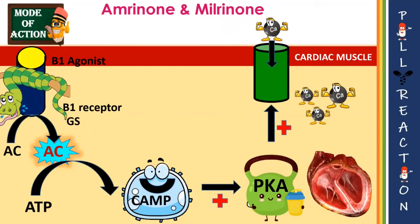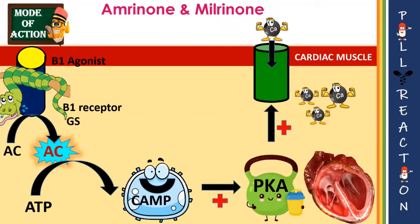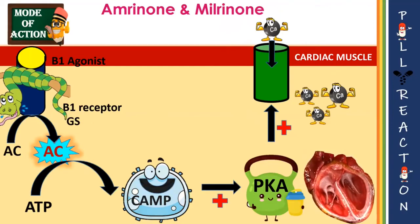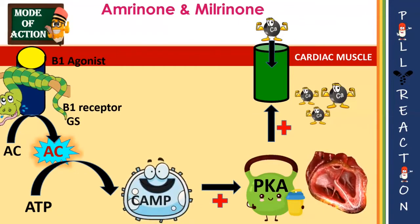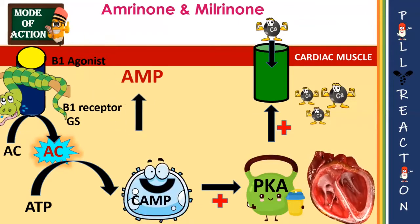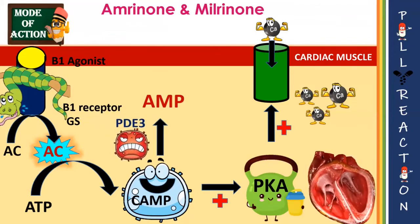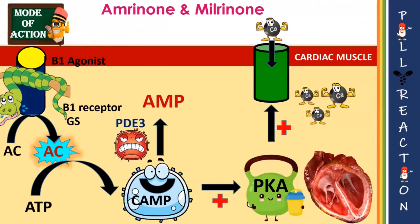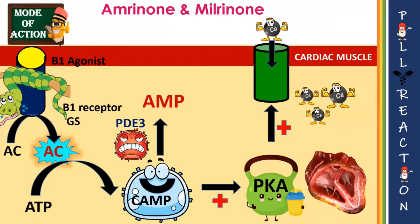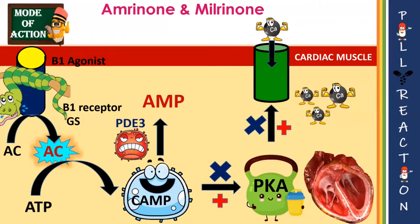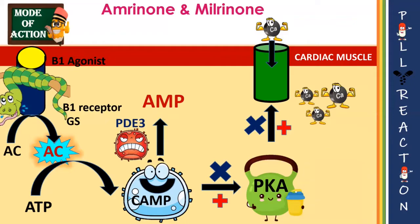Whenever an impulse reaches the cardiac muscle, this produces an increased force of contraction of the heart. Cyclic AMP increases the force of contraction, but this cyclic AMP can be terminated and metabolized to AMP by phosphodiesterase 3 enzymes, which are selective for cardiac muscle. This inactivates protein kinase A, which in turn inactivates calcium channels, resulting in no contraction.